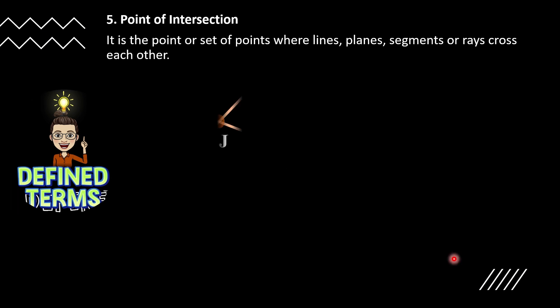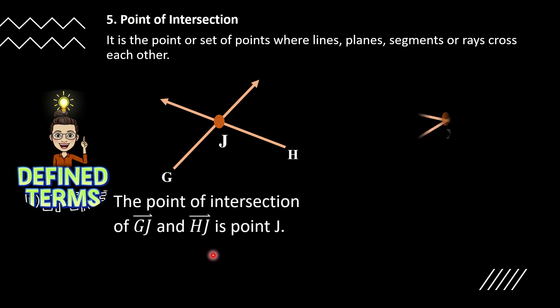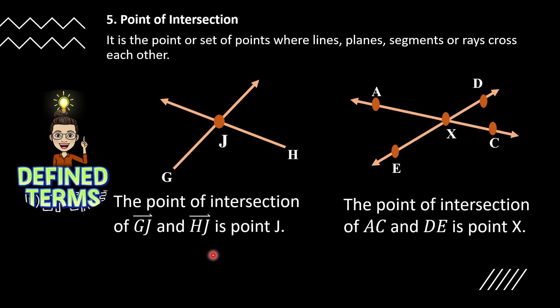And for number five, we have the point of intersection. The point of intersection is the point or set of points where lines, planes, segments, or rays cross each other. For our illustration, the point of intersection of ray GJ and ray HJ is point J. While the point of intersection of line AC and line DE is point X.